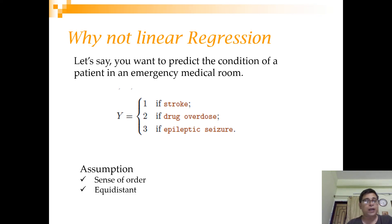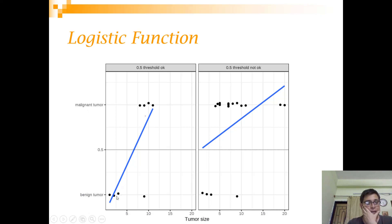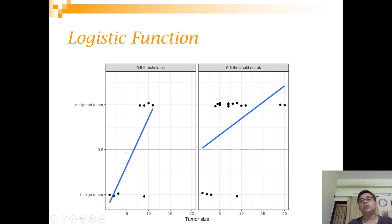But is linear regression suitable for any binary classification problem? Consider an example: you have tumor size on the x-axis and benign or malignant on the y-axis. If you fit a linear regression line, for a particular value of tumor size you can follow the line and correctly classify tumors when the prediction goes beyond 0.5. In this case all points are classified correctly.